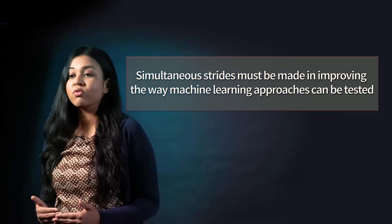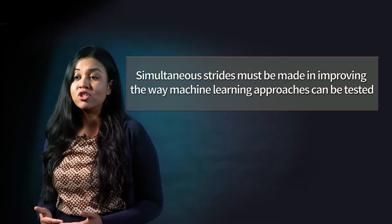One common criticism of machine learning, especially from regulators, is that the way it works is not transparent. So when things go wrong, it's difficult to pinpoint the source of the problem. For that reason, while developing machine learning applications for trading activities that could potentially impact markets, simultaneous strides must be made in improving the way machine learning approaches can be tested. That way, firms can leverage both the diligence and speed with which machines can trawl through large datasets, and the ability of humans to adapt and find solutions when things go wrong.